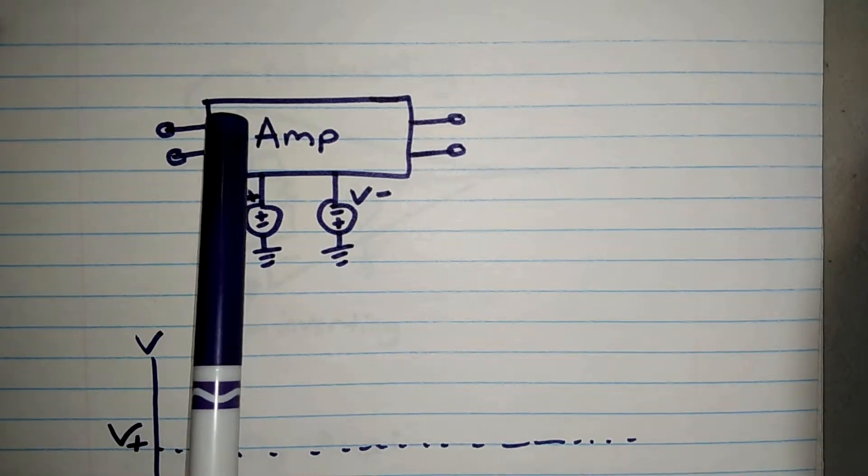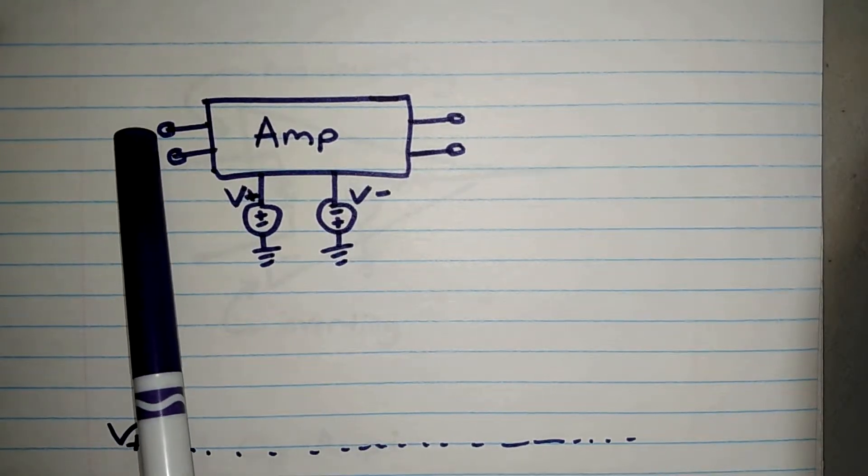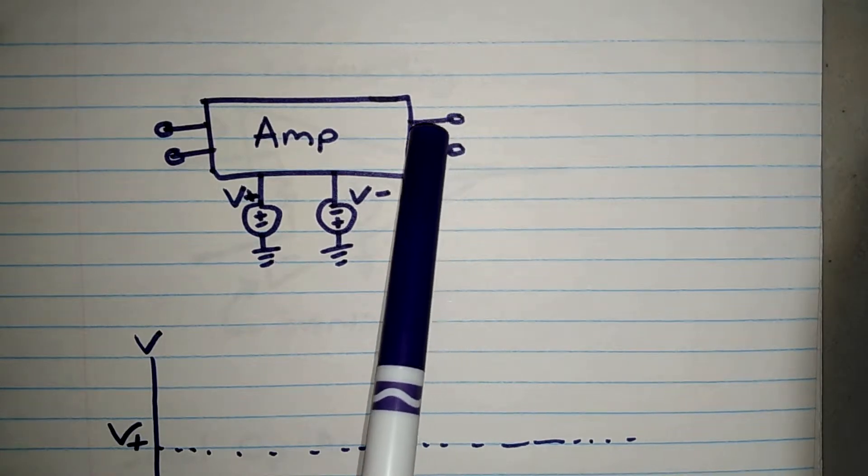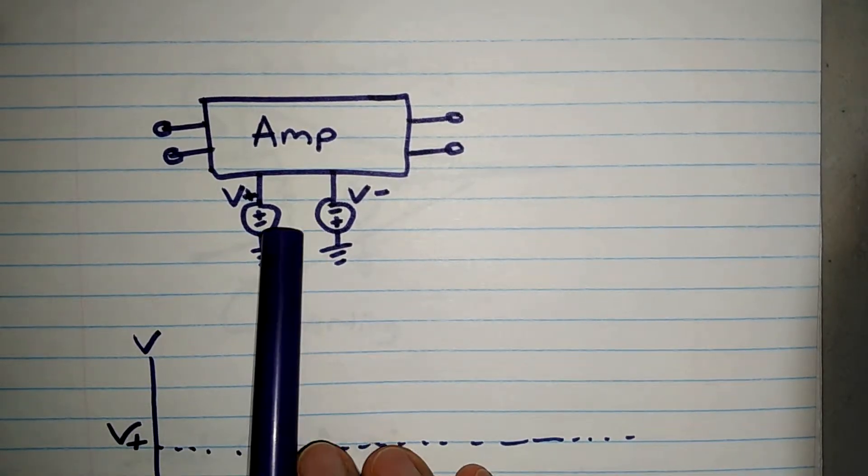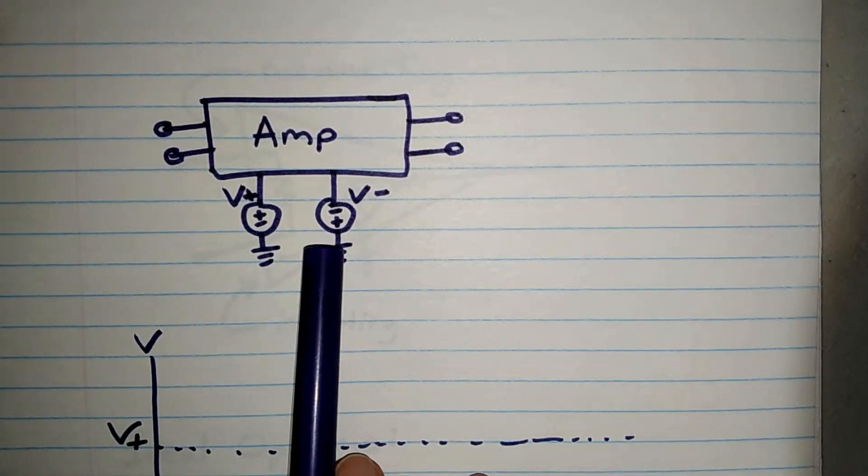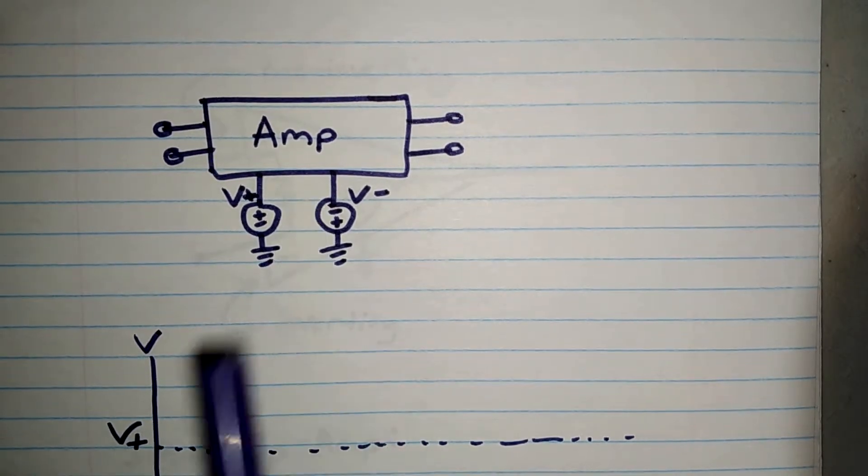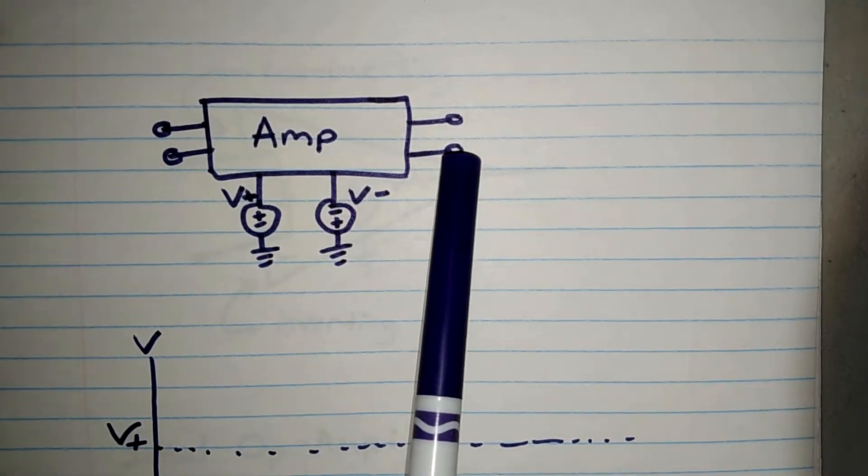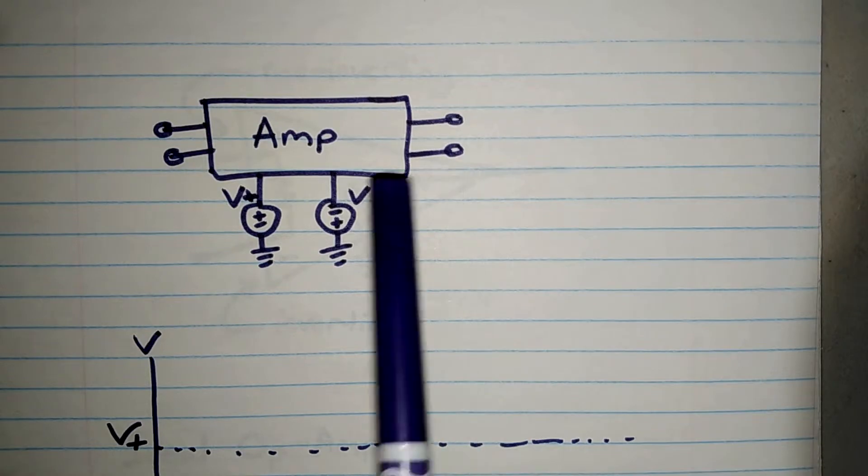When we have an amplifier, we don't just have the inputs and outputs as I showed in the previous videos. We have a power source to power the amplifier and produce a much greater output because the energy must come from somewhere.